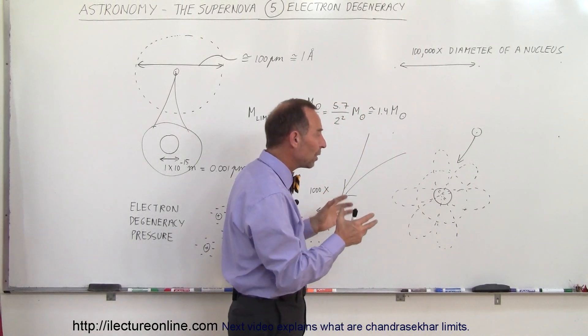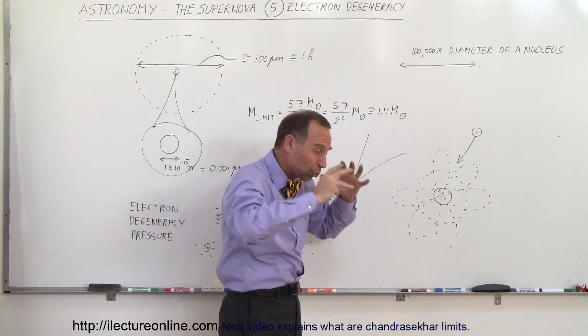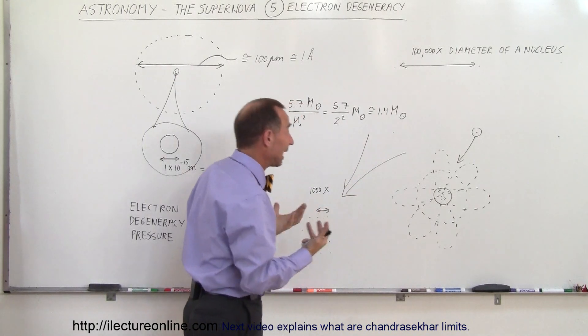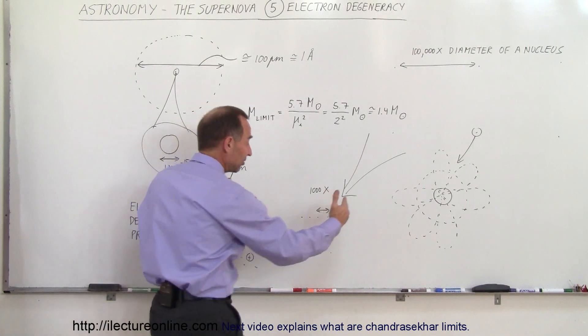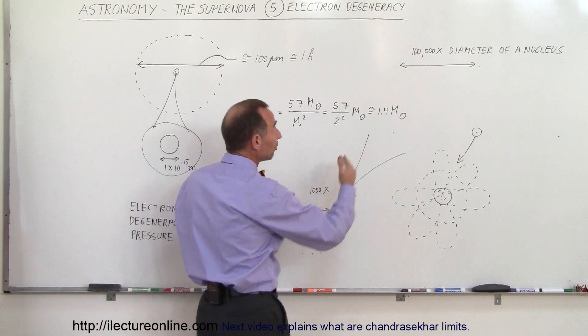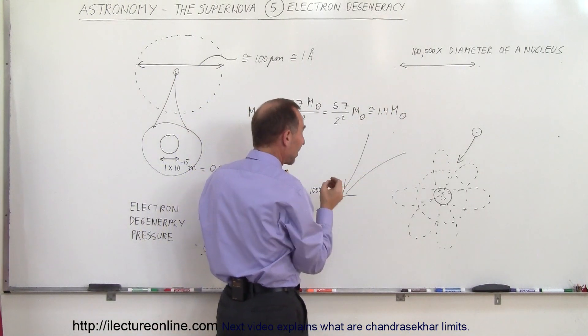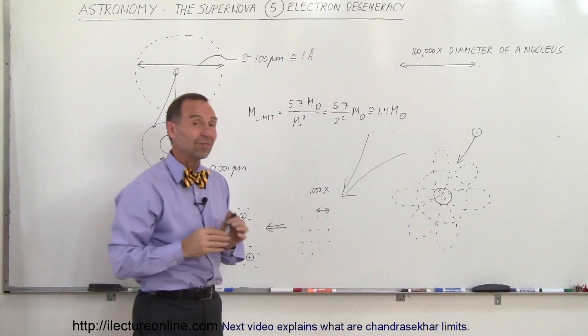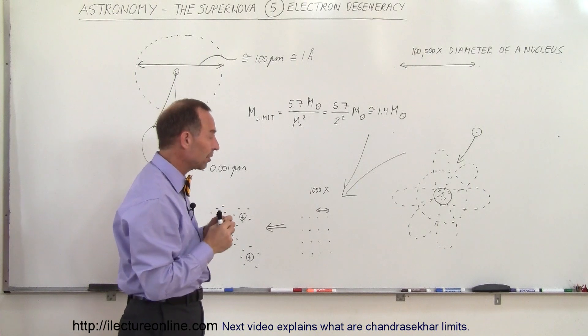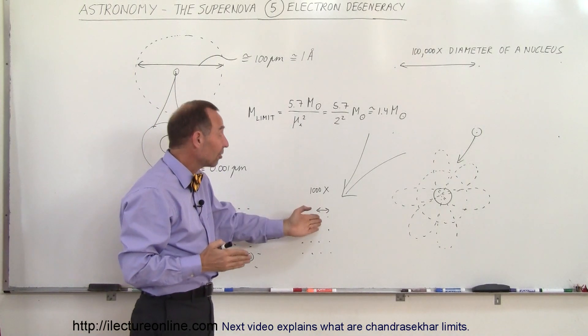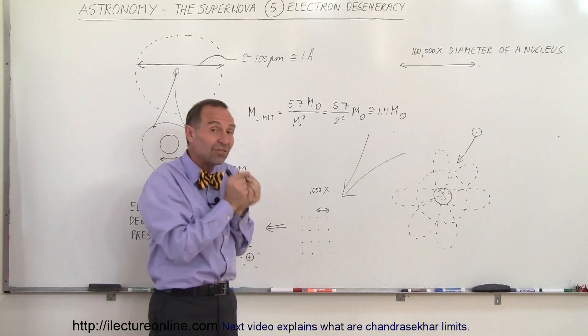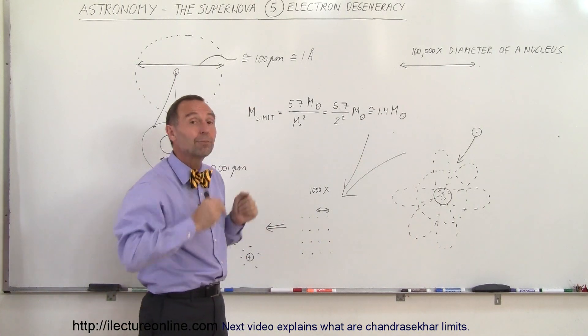So what happens when you take material like white dwarf material and you squish it together much denser than normal material on Earth, which is what happens in white dwarves? What happens then is the distance between them is squeezed from about 100,000 times the diameter of a nucleus to about 1,000 times the nuclear diameter. Now you say, well, 1,000 times is still a lot, but 1,000 compared to 100,000 is very small. It's only about 1% the distance that we were at before.